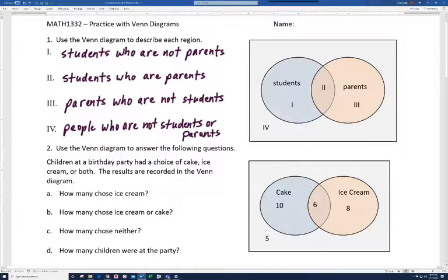All right, on number two, it says, use the Venn diagram to answer the following questions. Children at a birthday party had a choice of cake, ice cream, or both. The results are recorded in the Venn diagram. So, if you look at the diagram, it says, how many chose ice cream?